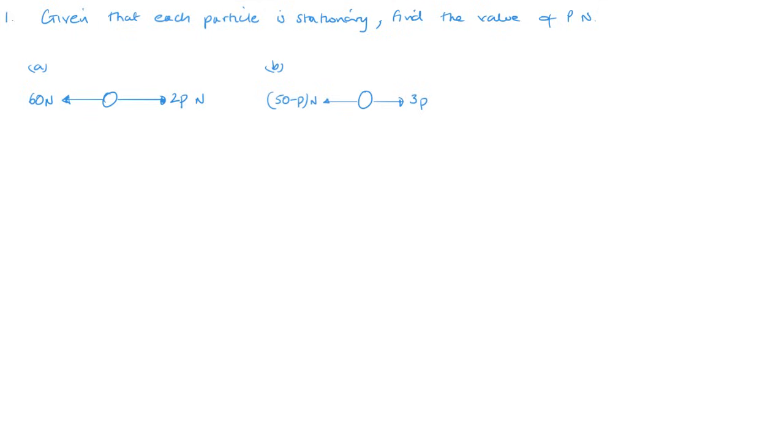Both of these particles are stationary so the forces are balanced. So for part a that means 60 newtons equals 2p, so p equals 30 newtons. And for part b that means 50 minus p is equal to 3p, so 50 equals 4p, so p equals 12.5 newtons. Nice straightforward, really simple maths.